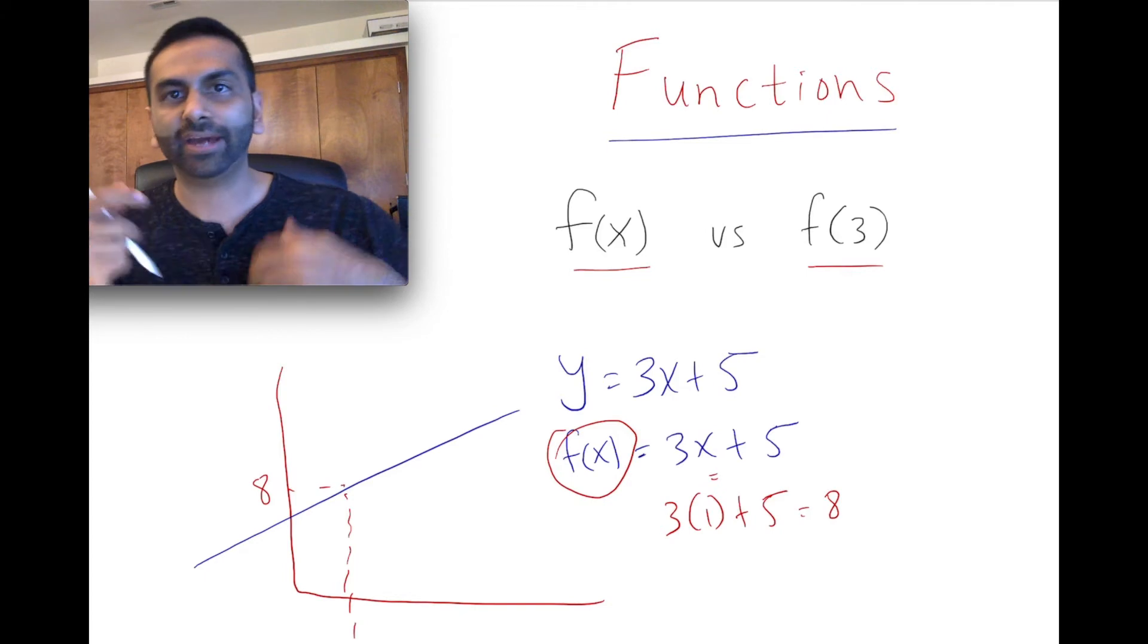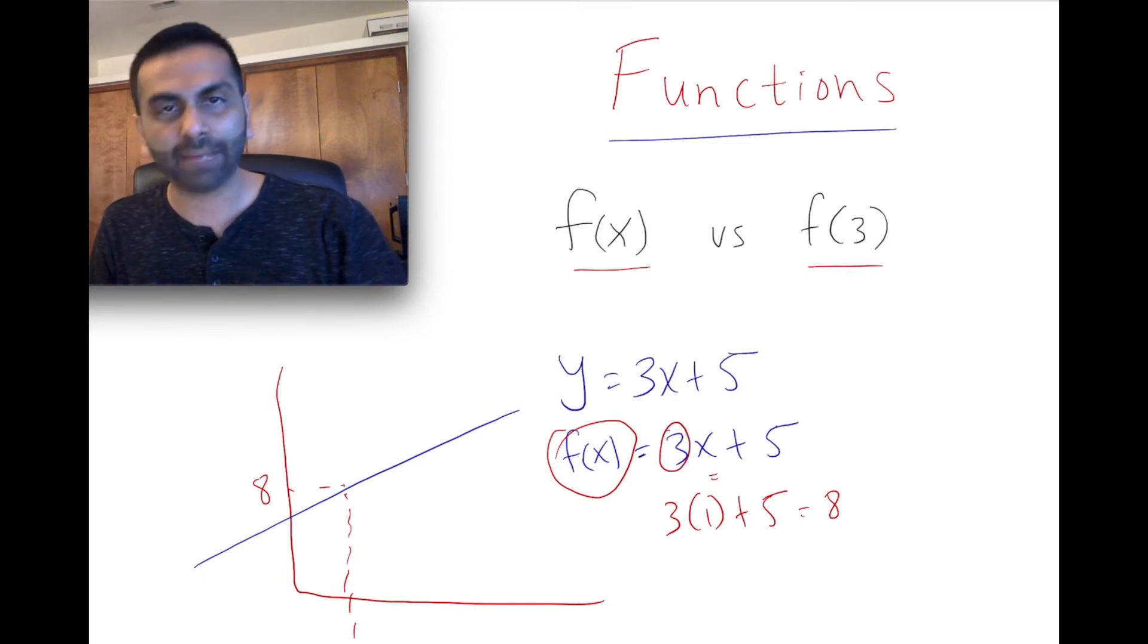It's doing the same thing no matter what x you plug in. If you plug in x equals 2, you're still going to do the same thing. You're going to multiply it by 3, and you're going to add 5, and then you're going to get another output. And that's f of 2.